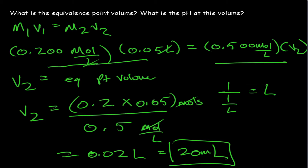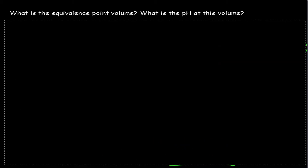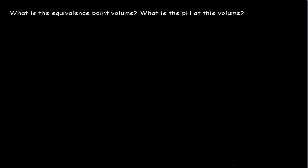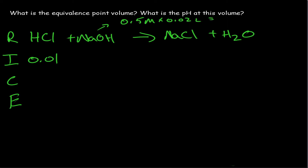So the next question asks: what is the pH at this volume — after 20 mL of NaOH has been added? Let's consider our RISE table. The reaction is HCl plus NaOH giving NaCl and H₂O. The moles of HCl we calculated before was 0.01 moles. At the equivalence point, the moles of NaOH is 0.5 molar times 0.02 liters, which also gives 0.01 moles. You can see why this is the equivalence point: the moles of HCl equal the moles of NaOH.